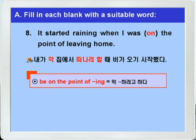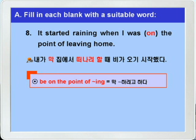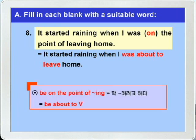정답과 함께 'be about to 부정사'를 넣어서 문장을 전환해 보겠습니다. 'It started raining when I was on the point of leaving home.' 'It started raining when I was about to leave home.' be about 다음에는 to부정사가 와야 합니다. 그래서 'to leave'가 나온 것이죠. 꼭 다시 한 번 더 확인해 보시기 바랍니다.